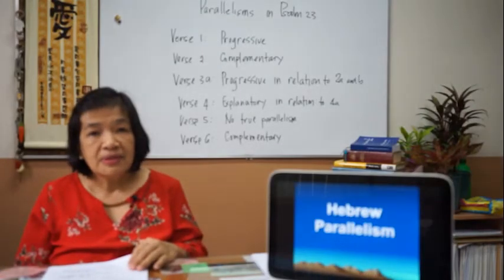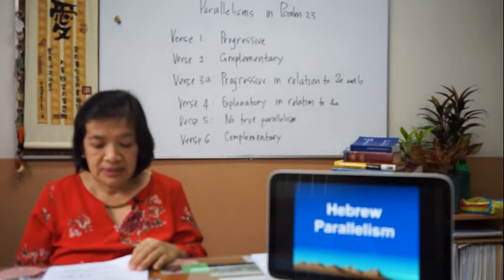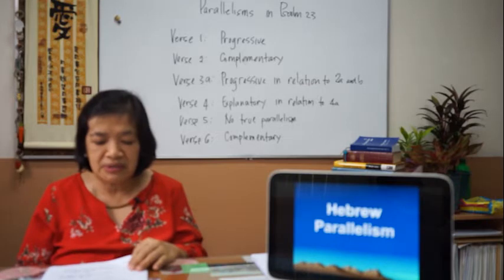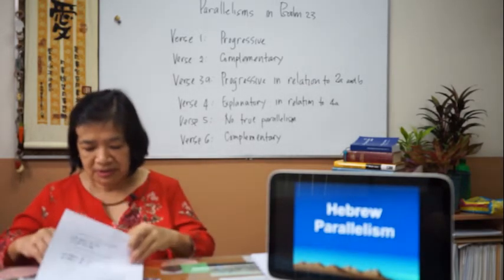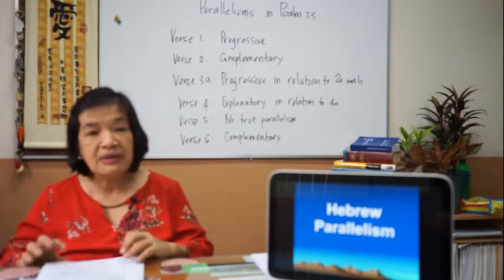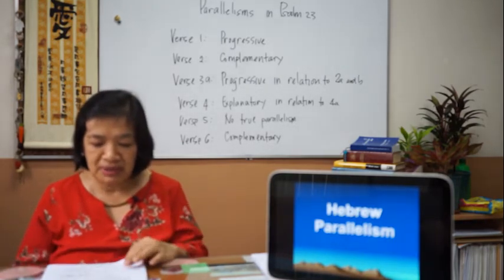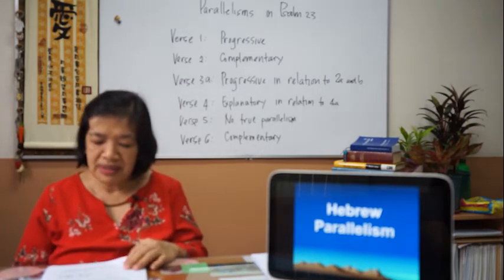Let's now consider types and categories. These categories integrate the definitions and principles set forth by those who studied parallelism since the time of Loth: semantic relationships, word pairs, and linguistic models. Under semantic relationship, we analyze parallel lines in terms of the same meaning.